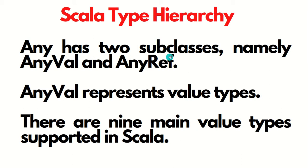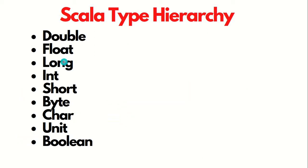Any has two subclasses: AnyVal and AnyRef. AnyVal represents the value types, and there are nine value types supported in Scala that we use quite often. Those nine are: Double, Float, Long, Integer, Short, Byte, Char, Unit, and Boolean. Most of these types are very common and you will find them in all programming languages, while some are a little unique and specific to Scala.